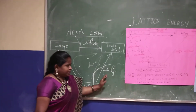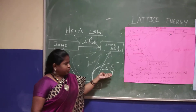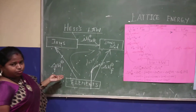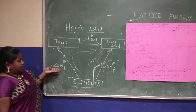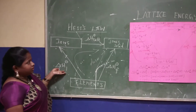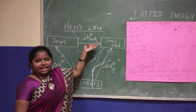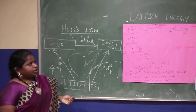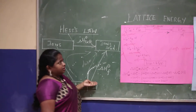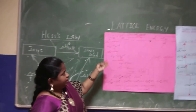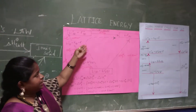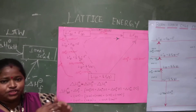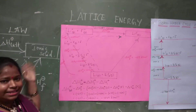The direct way is the enthalpy change of formation. The indirect way is equal to ionization plus the enthalpy change of lattice energy. This is the enthalpy cycle, and it follows Hess's Law.